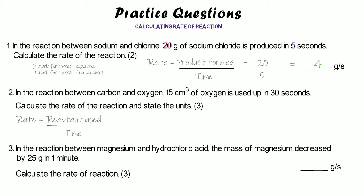For question two, 15 centimetres cubed of oxygen is used up, so we do reactant used divided by time: 15 centimetres cubed divided by 30 seconds equals 0.5. For the units, centimetres cubed divided by seconds gives centimetres cubed per second, so the final answer is 0.5 centimetres cubed per second. You get one mark for the process, one for the answer 0.5, and one for correctly stating the units.